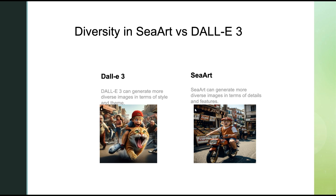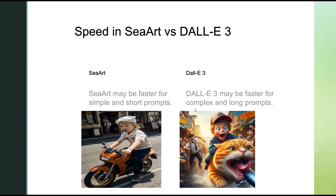SeaArt can generate more diverse images in terms of details and features, creating images that are rich, detailed, and nuanced, and can adjust the colors, shapes, sizes, and positions of elements. Speed — how fast and efficient the images are generated. SeaArt and DALL-E 3 have similar performance, but may vary depending on the complexity and length of the text prompts and the quality and resolution of the images. SeaArt may be faster for simple and short prompts, as it can quickly find and combine the best images that match the words. DALL-E 3 may be faster for complex and long prompts, as it can quickly generate and display images without searching a large database.